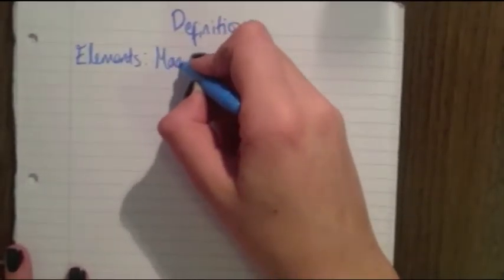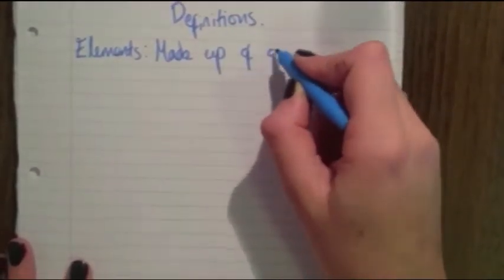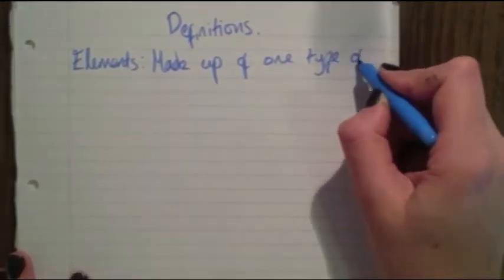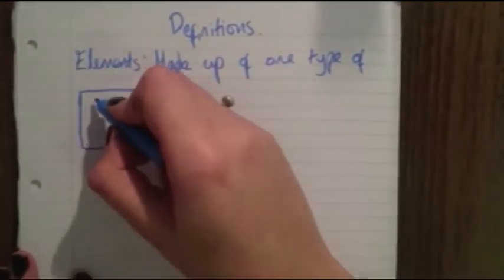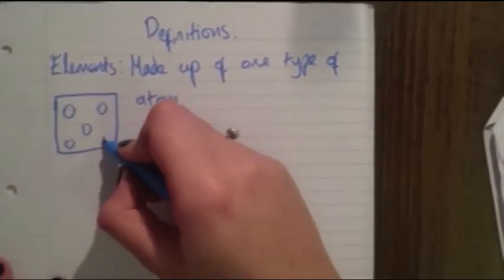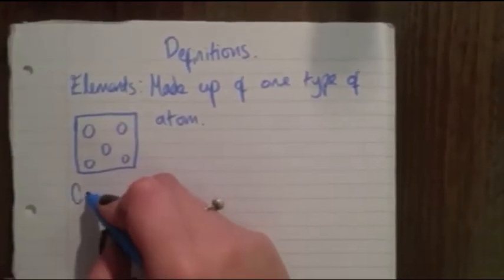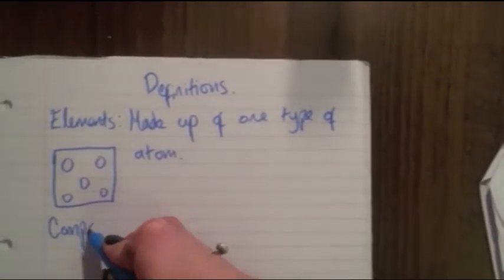Now we will be moving on to definitions. The first definition you need to know is an element. An element is made up of just one type of atom only. So in the diagram you can see that there is only one type of atom.